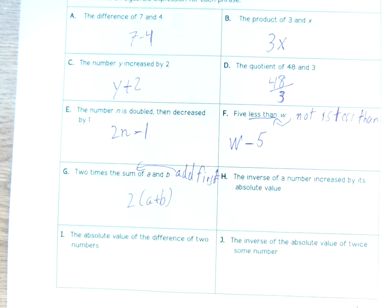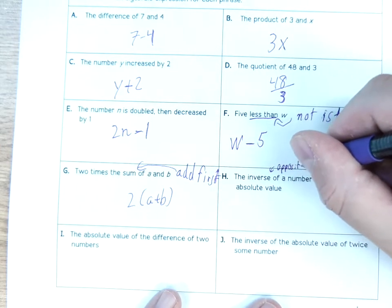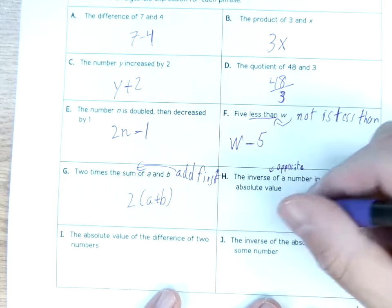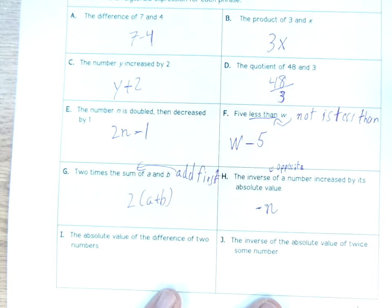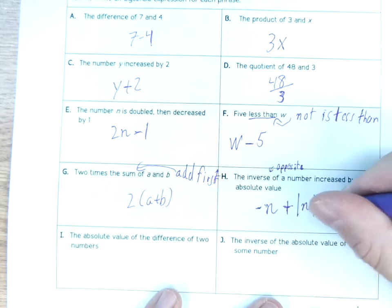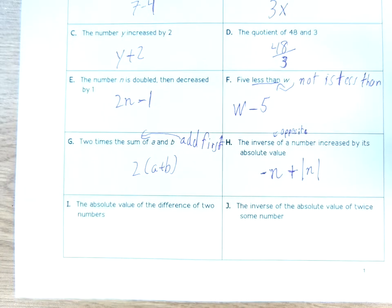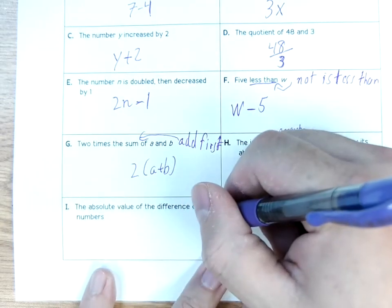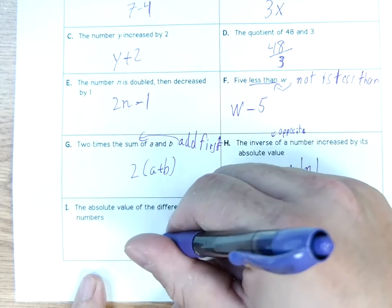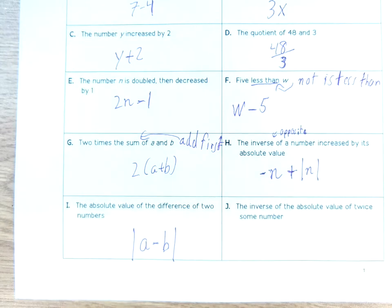'The inverse of a number.' Inverse does not mean reciprocal — it means opposite. Keyword: inverse means opposite. So 'the inverse of a number' is the opposite of a number, increased by its absolute value — add absolute value symbols, the straight bars. Next: 'The absolute value of the difference of two numbers.' We're just going to subtract two random numbers, a and b, and then take the absolute value: |a − b|.